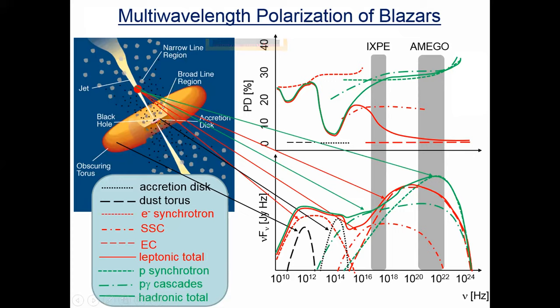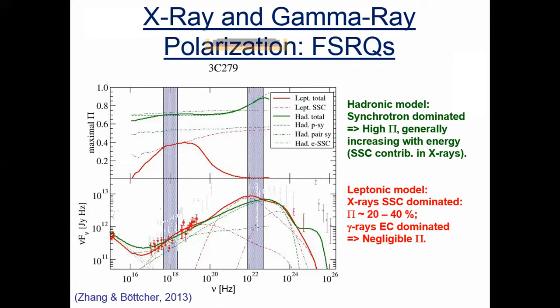We've done better than this sketch: Haocheng Zhang in his PhD thesis calculated high-energy polarization signatures for leptonic and hadronic radiation models. For low-frequency-peaked blazars and FSRQ-type blazars, in leptonic models the X-rays are produced by synchrotron self-Compton, so you expect a relatively moderate degree of polarization, whereas in hadronic models everything is synchrotron, and you expect high degrees of polarization both in X-rays and in gamma rays.